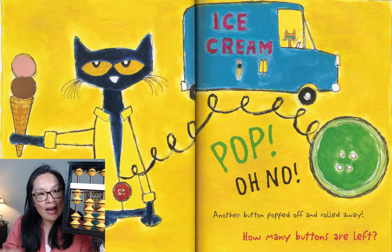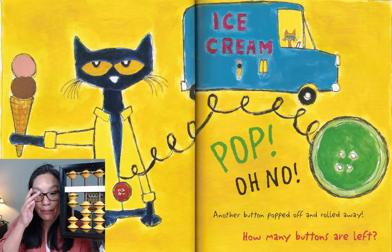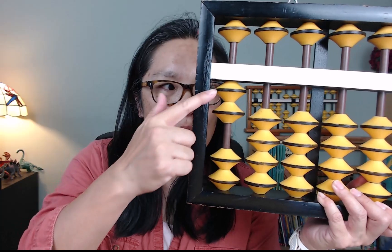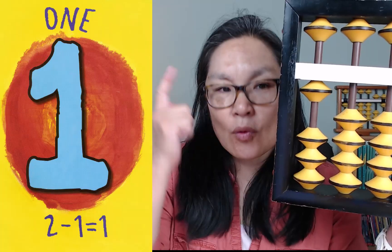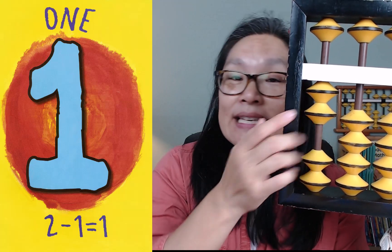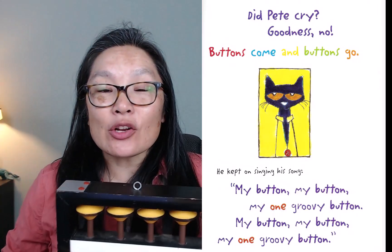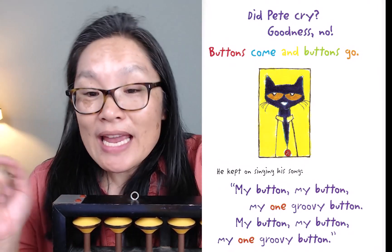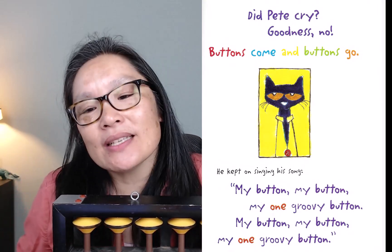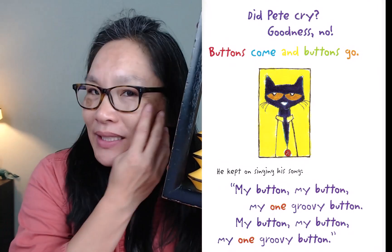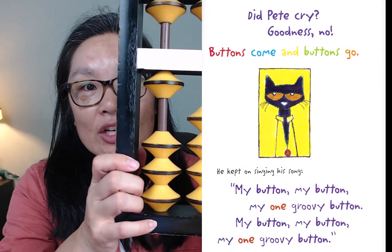The ice cream truck came by to give Pete the Cat some ice cream, and pop! Oh no! Another button popped off. We had two and one popped off — how many buttons does Pete have? One. We have one button left on his shirt. We did have two, now we have one. Did Pete cry? Goodness no! Buttons come and buttons go. He kept singing — my buttons, my buttons, my one groovy button.